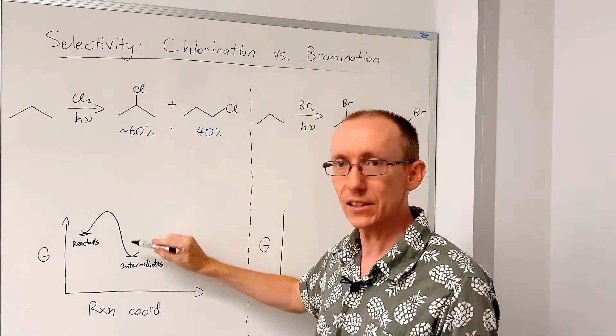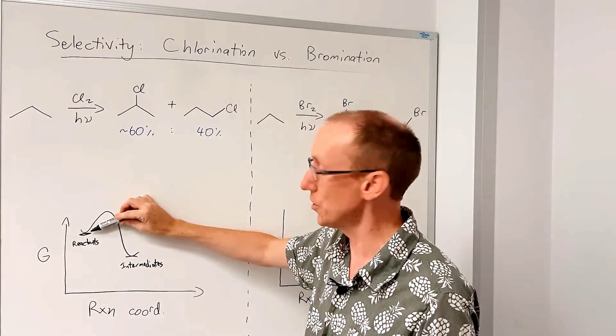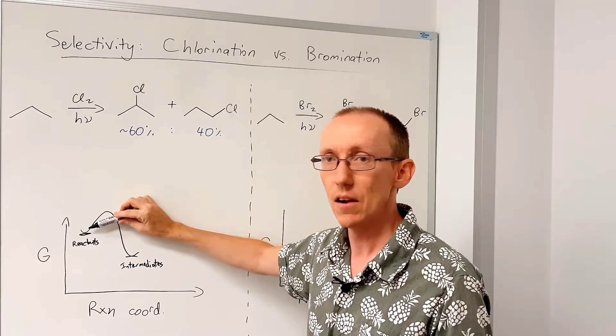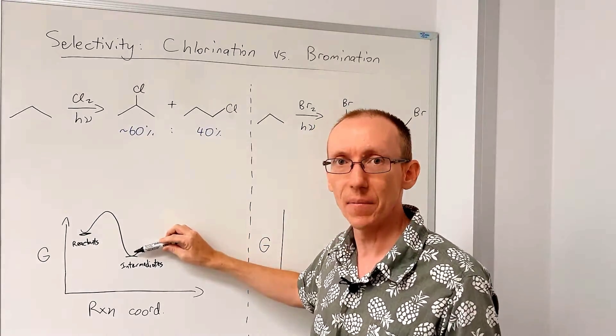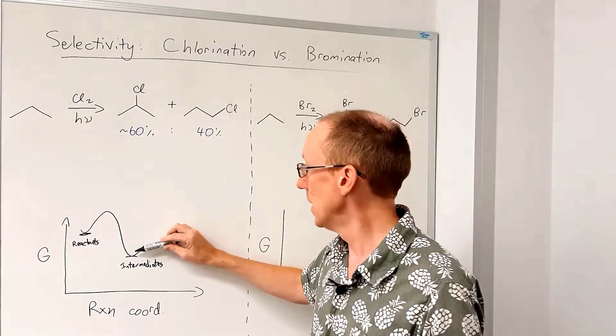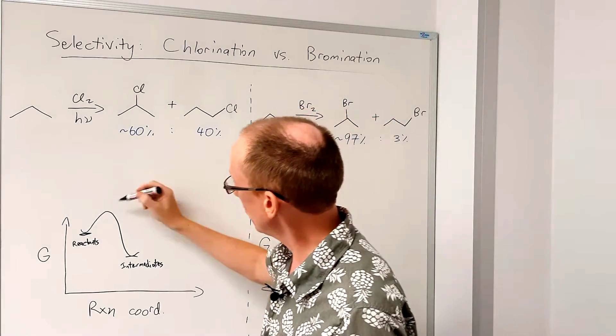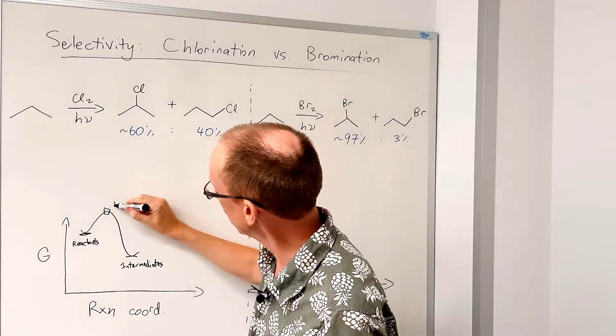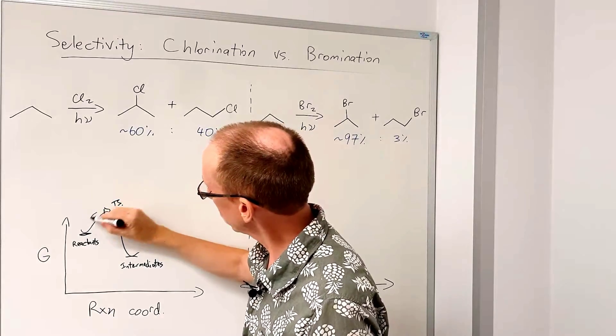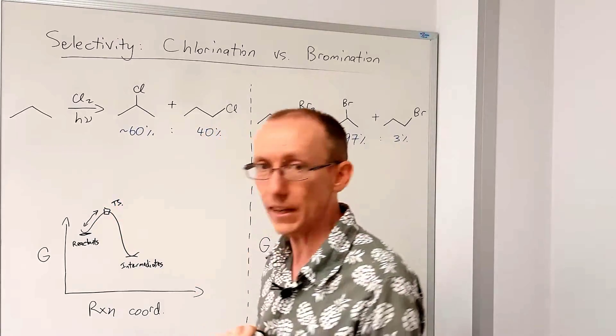So this is going to be an exothermic process from very high energy chlorine radical to an alkyl radical. And if we look at this, because the transition state here is close in energy to the reactants, Hammond postulate says that they should be similar in structure.